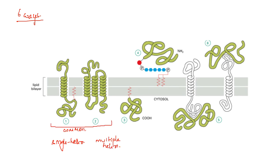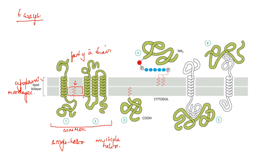Some membrane proteins have a fatty acid chain which is inserted in the cytoplasmic monolayer only — not spanning both layers. This is an uncommon type where a single pass membrane protein has a fatty acid chain associated with the cytoplasmic monolayer.